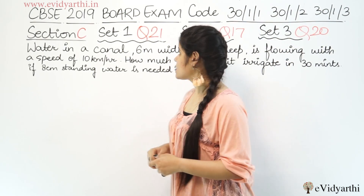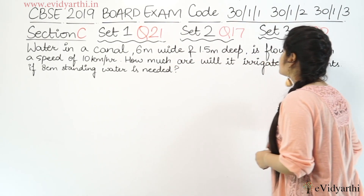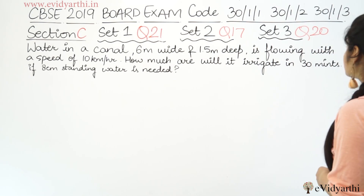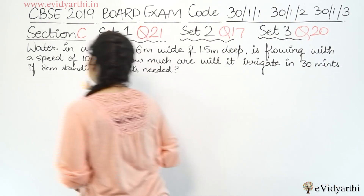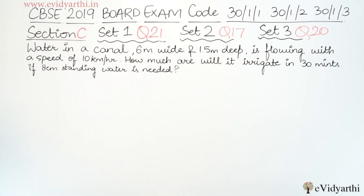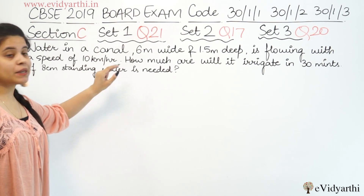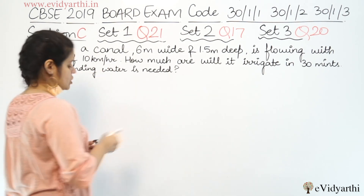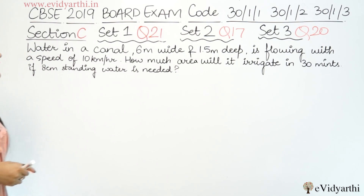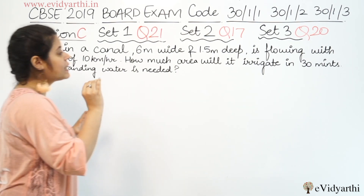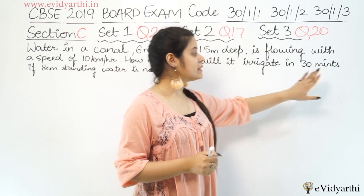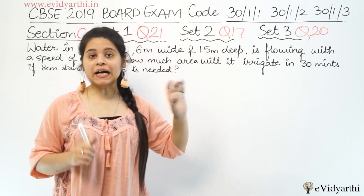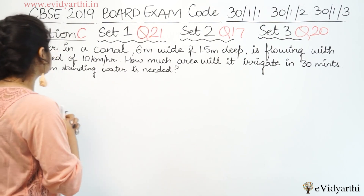Now coming to the next question. This is question number 21 of set 1, question number 17 of set 2, and question number 20 of set number 3. Water in a canal 6 meter wide and 1.5 meter deep is flowing with a speed of 10 km per hour. How much area will it irrigate in 30 minutes if 8 cm standing water is needed?